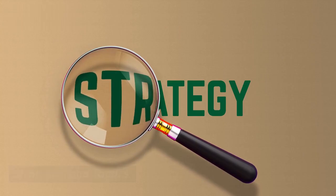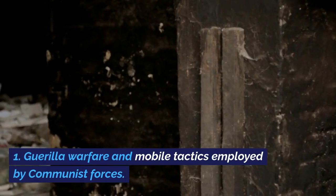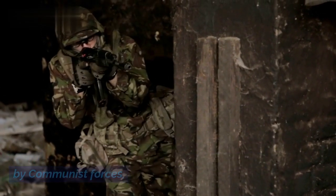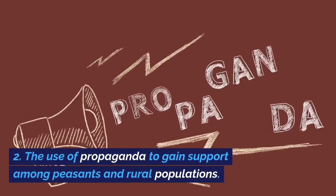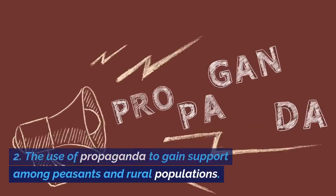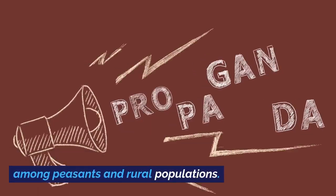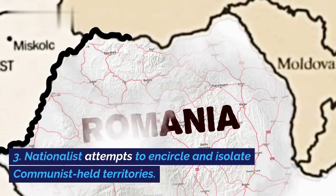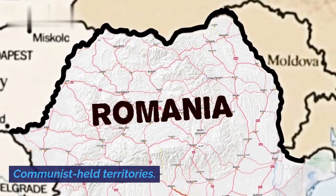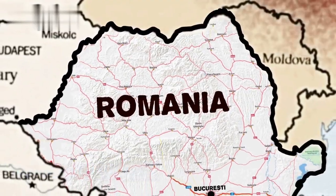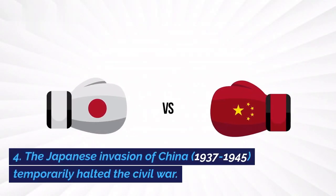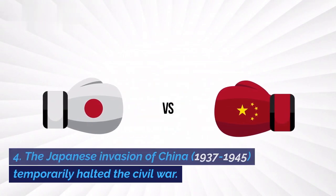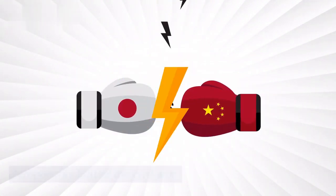Strategies and tactics included guerrilla warfare and mobile tactics employed by Communist forces, and the use of propaganda to gain support among peasants and rural populations. Nationalist attempts to encircle and isolate Communist-held territories were also significant. The Japanese invasion of China, 1937–1945, temporarily halted the Civil War.